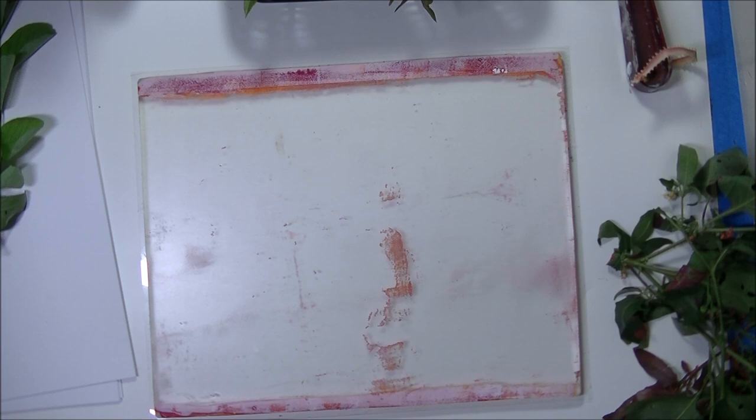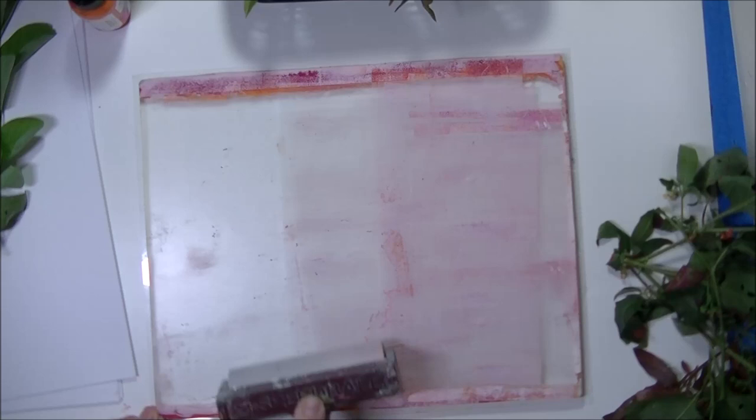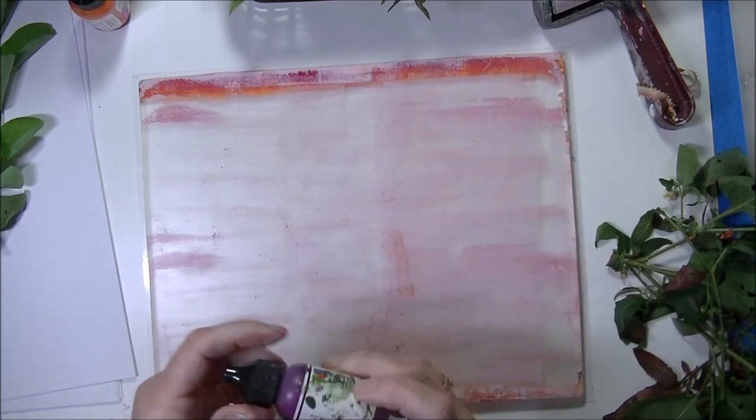Alors on a la possibilité de travailler autrement. Je vais pas perdre la peinture blanche que j'ai ici, je l'étale sur ma plaque et je vais aller sur du eggplant. Donc là on est un petit peu plus sur du violacé.